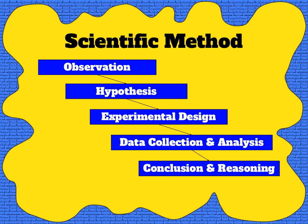Observation, hypothesis, experimental design, data collection and analysis, and conclusion and reasoning — these are the five steps of the scientific method.